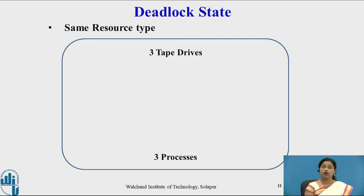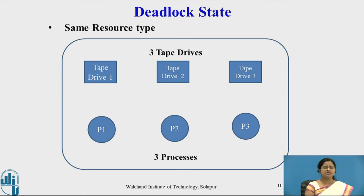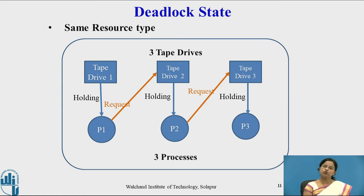Consider a situation where we have three tape drives and three processes. We have one resource type — tape drive — with three instances. Process P1 is already using tape drive 1, P2 is using tape drive 2, and P3 is using tape drive 3. Now suppose P1 requests tape drive 2, P2 requests tape drive 3, and P3 requests tape drive 1.